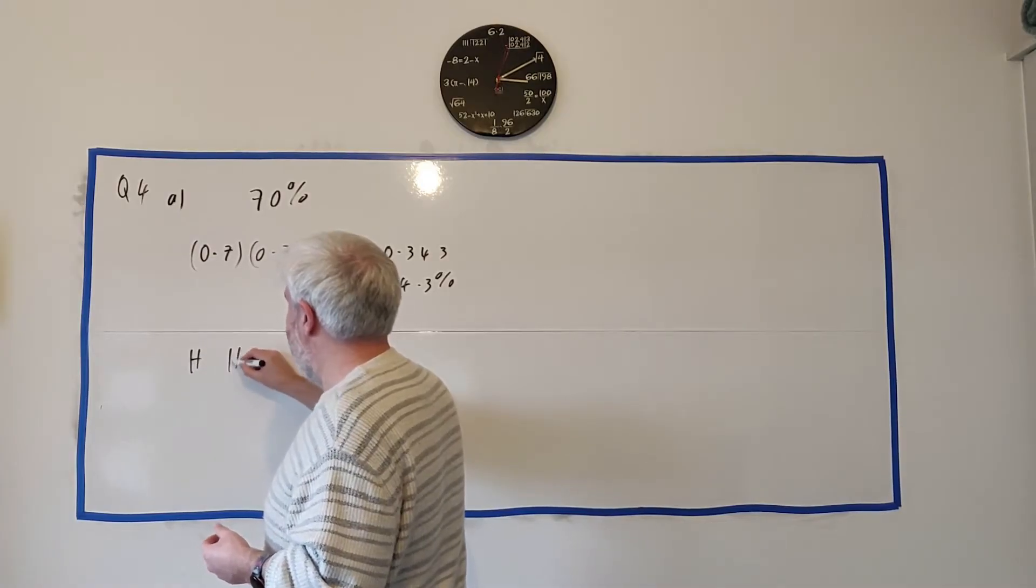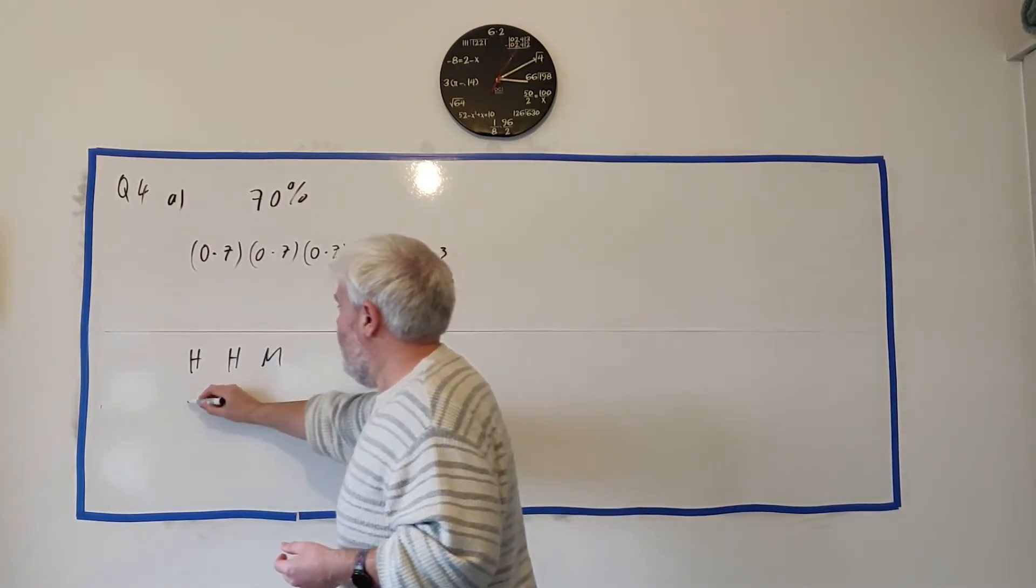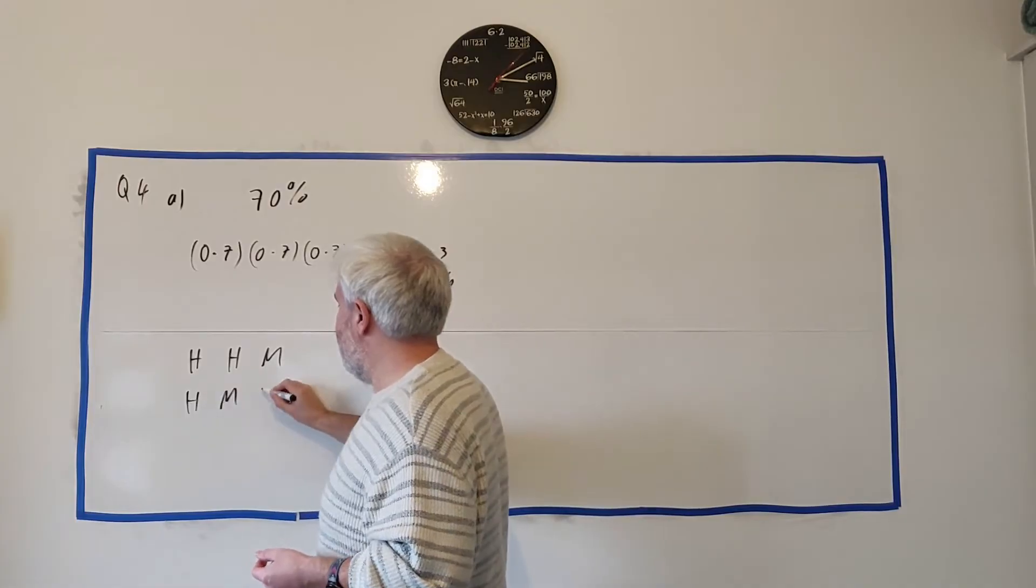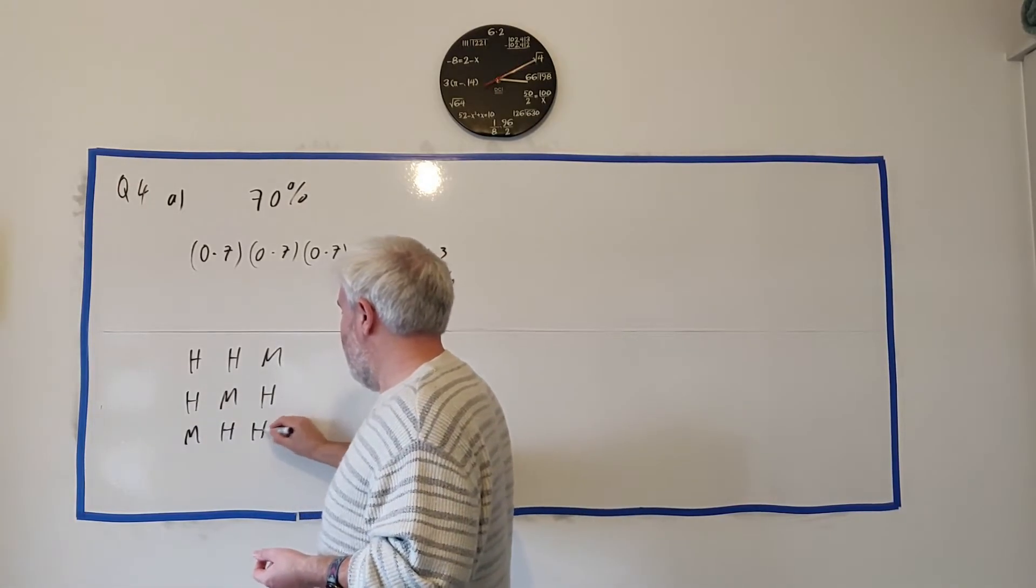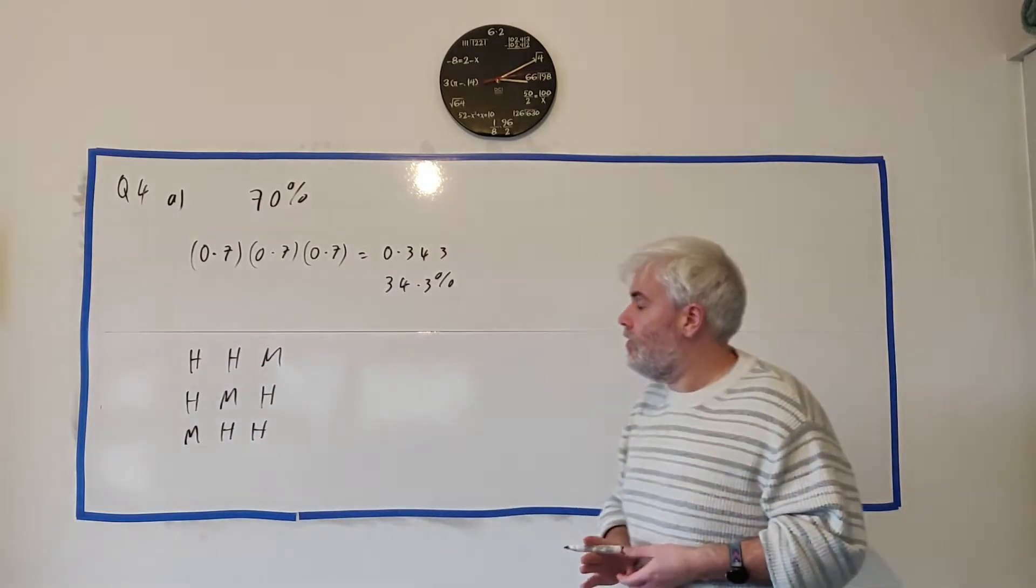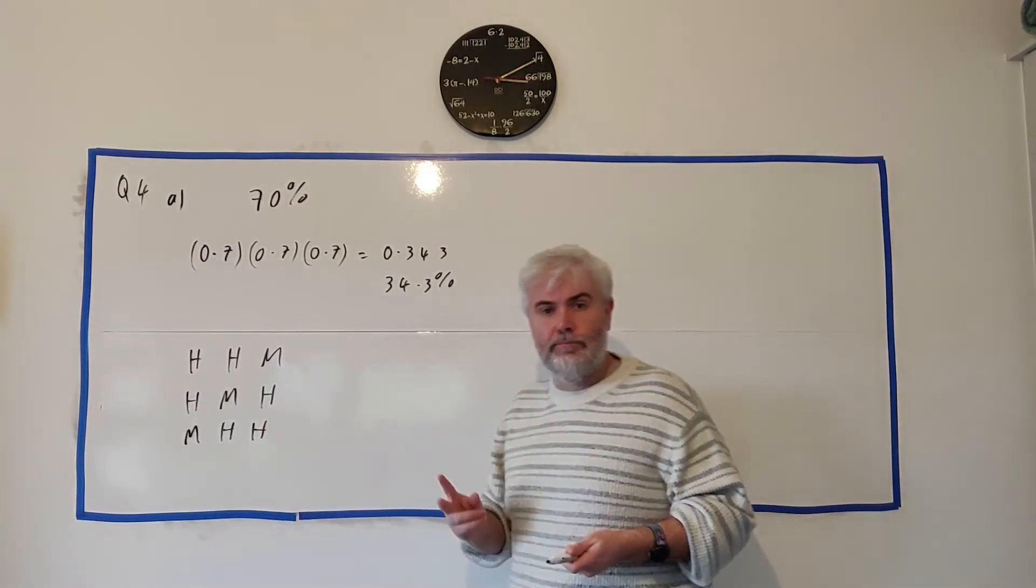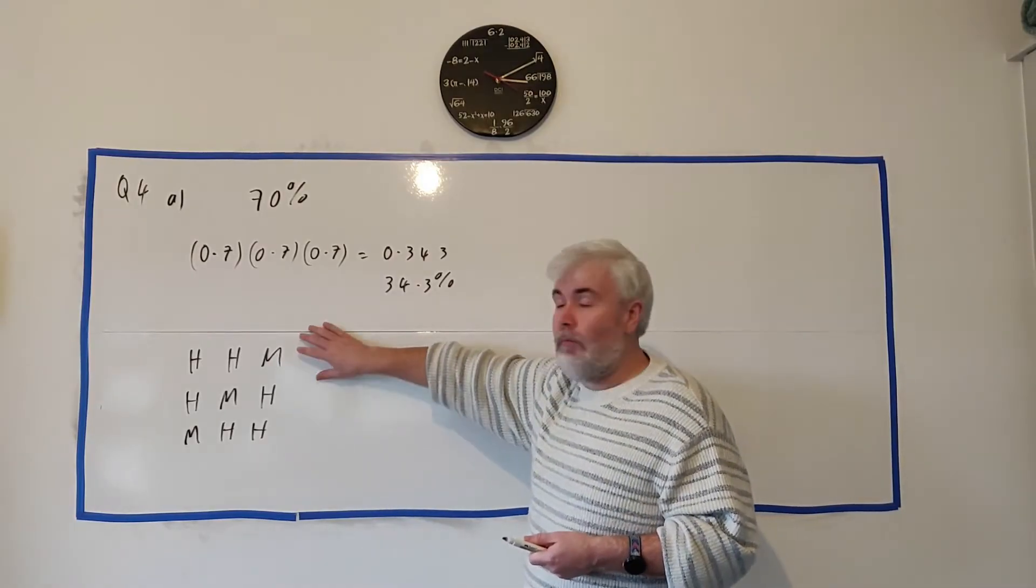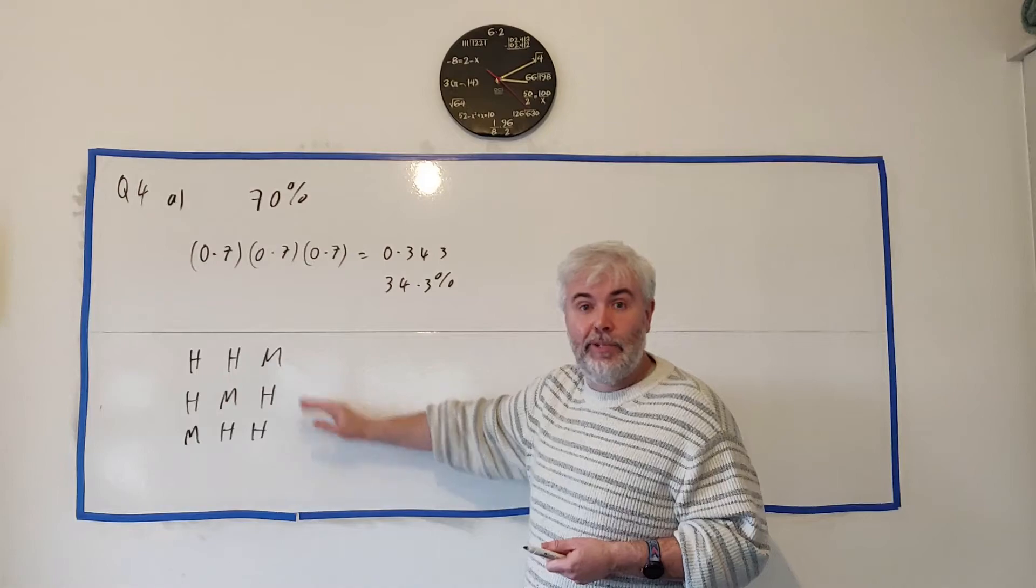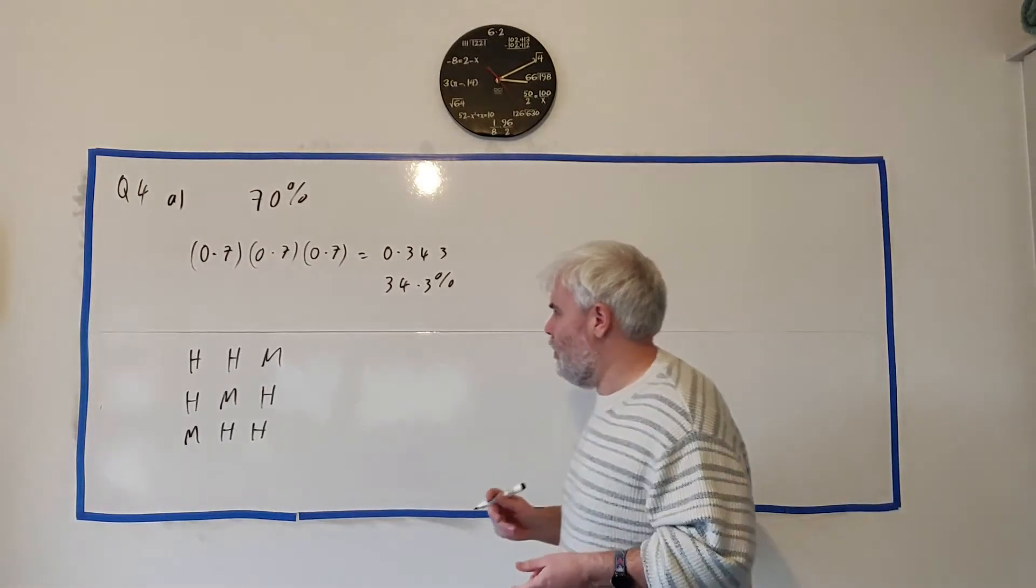There's three ways in fact. He could hit, hit, miss, or he could miss, hit, hit. They're the only three different ways he could make two of them. And what we could do is work out the probability of each of these and add them together. So let's start doing that.